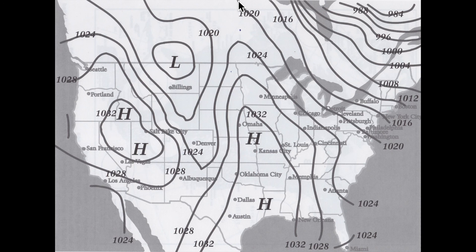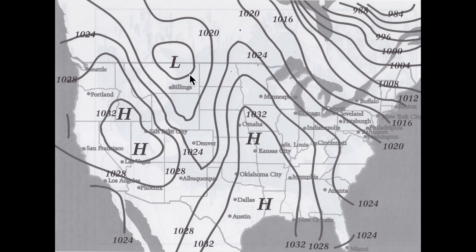Somewhere off the screen it must loop around and connect, so there is a decline of four millibars. Knowing that 1024 is one line and 1020 is the next, this next one has to be four less than 1020 — so this location is an area of 1016 millibars, a lower area of pressure, which is why there's an 'L' inside of it.